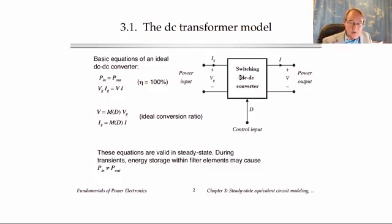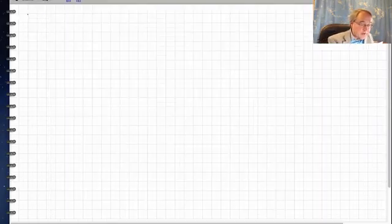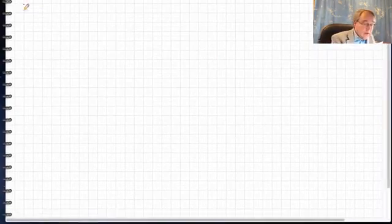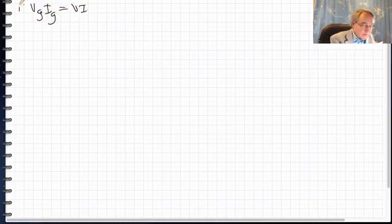Now, what kind of equivalent circuit could we construct to go with those three equations? Okay, well, I'm going to actually draw that here. So we had VG times IG equals V times I, that's the first one.